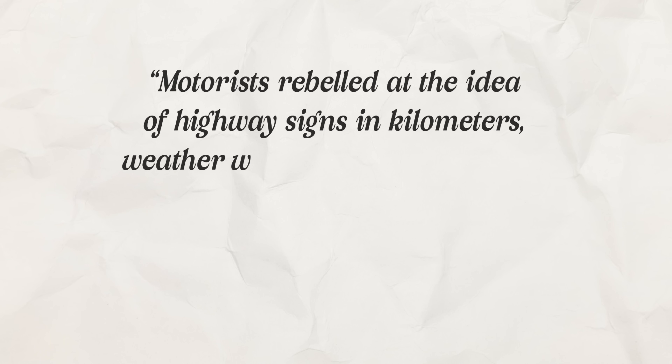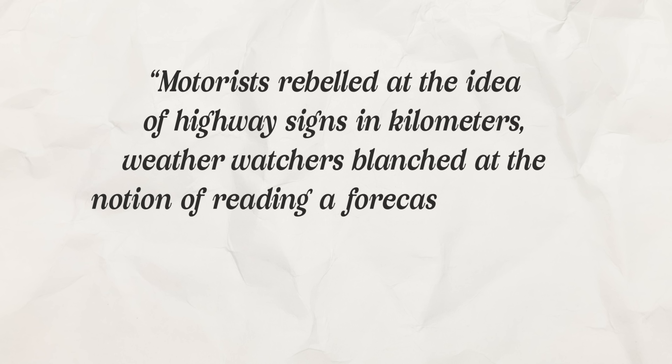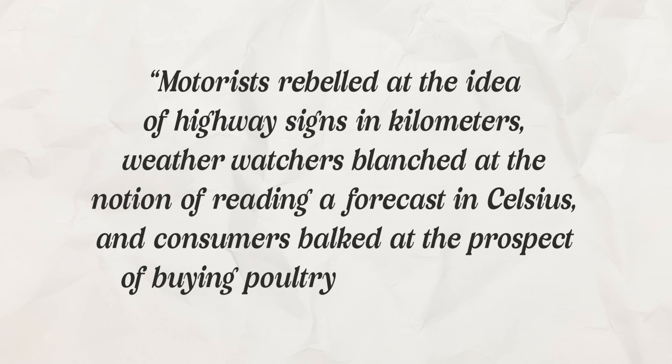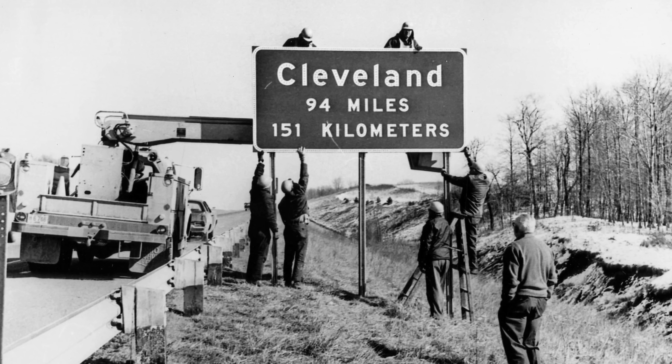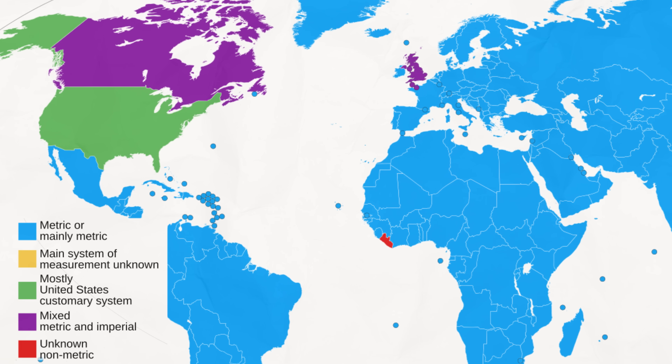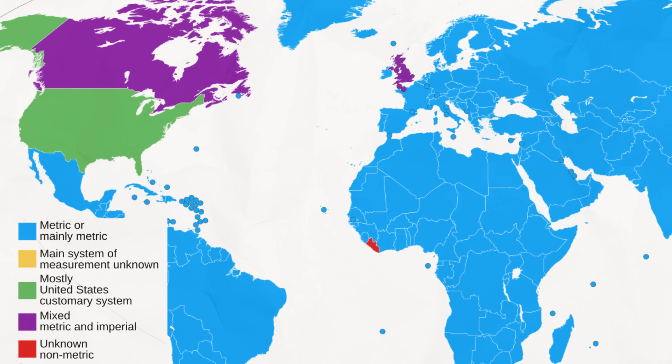A quote from the time describes how motorists rebelled at highway signs in kilometers, weather watchers blanched at forecasts in Celsius, and consumers balked at buying poultry by the kilogram. And honestly, I get it — I remember when I was around five years old and Portugal switched from their currency to the euro; it was so confusing to adapt. If we suddenly switched how we measured and weighed things, and changed all the road signs, I think I would have been against it too because of how confusing it would be. In 1982, the metric board was dissolved, just seven years after they started. They just kind of accepted this would be one more thing in which they'd be different from the rest of the world.